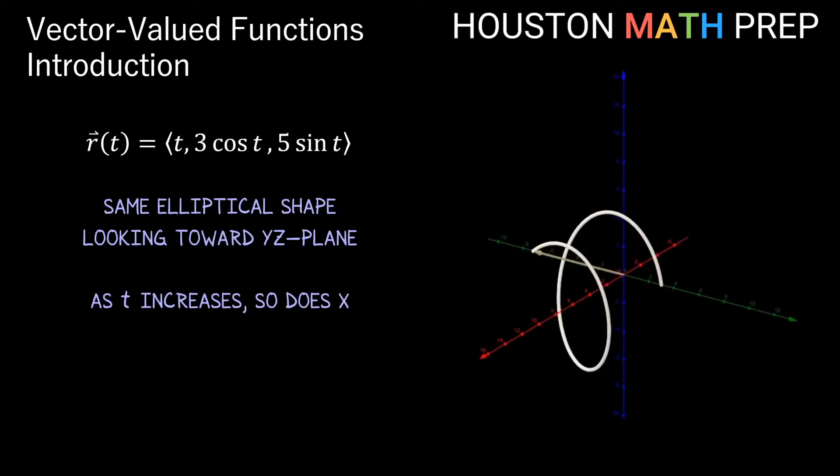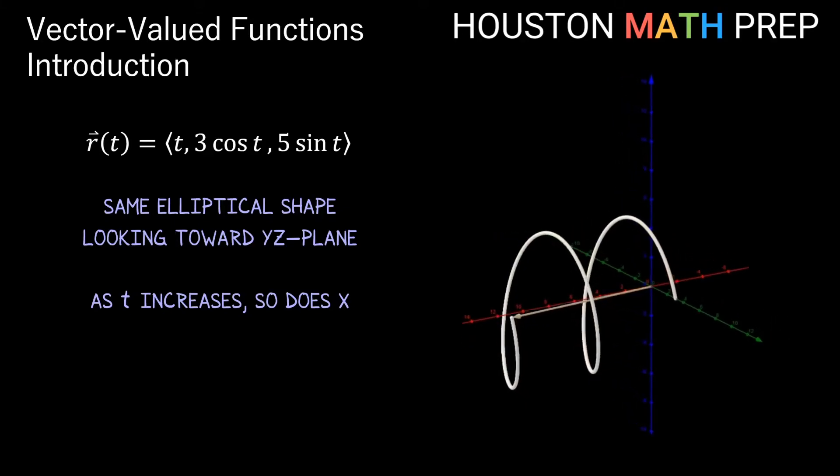But as the value for t gets larger, we won't be staying in the plane x equals 0 anymore. The x value will be increasing, so our path is moving forward in space as it traces an elliptical shape in the y and z directions. This gives us a helix, what looks like a coil in 3D space, that has an elliptical shape to it.